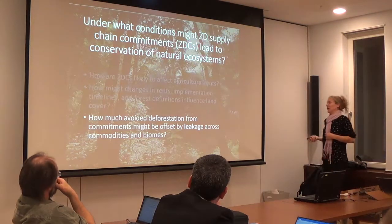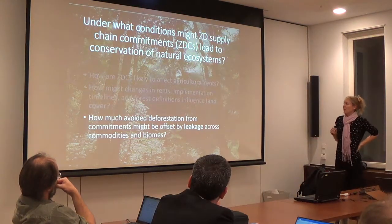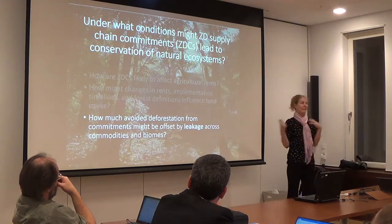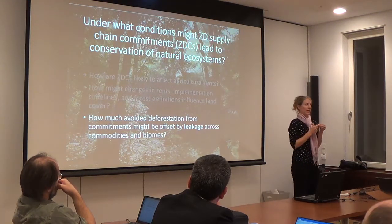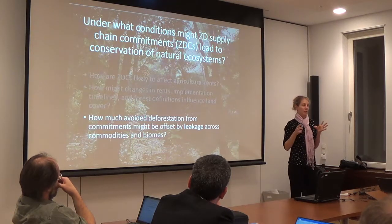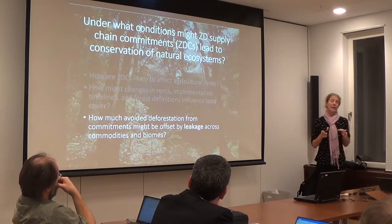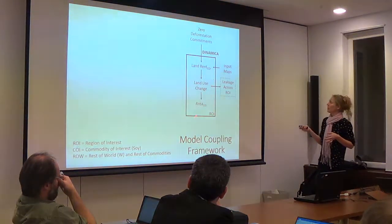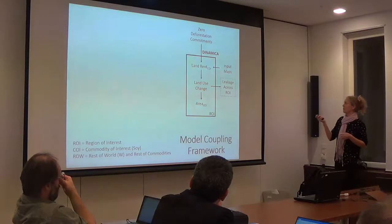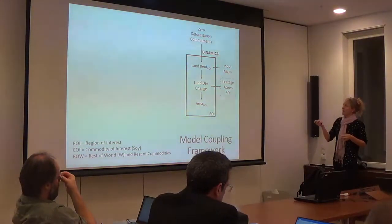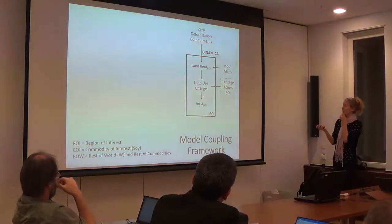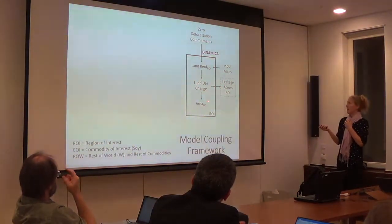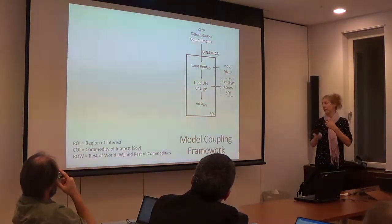The third question is how much avoided deforestation from these commitments might be offset by leakage across commodities and biomes. So far we've been dealing with regional-scale leakage in the Dynamica model, which takes commitments and input data, models land rents and land use change, and potentially captures regional leakage — giving us soybean area as an output.